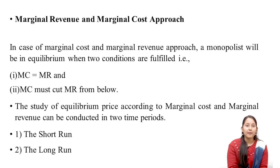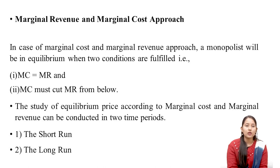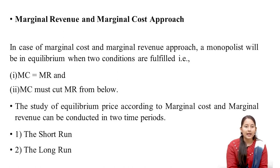The second approach is the marginal revenue and marginal cost approach. A monopolist will be in equilibrium when two conditions are fulfilled: first, MC is equal to MR; and second, the marginal cost must cut MR from below. The study of equilibrium price according to the marginal cost and marginal revenue approach can be conducted in two time periods: the short run and the long run.